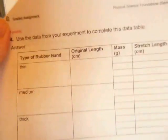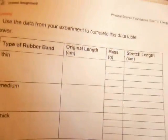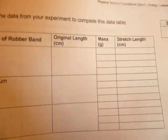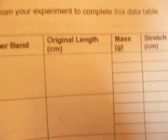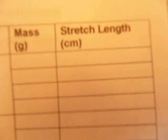Now you can start the actual lab procedure. And you already have a data table. Let me get this in focus here. You already have a data table to fill out. You've got thin rubber band, medium rubber band, thick rubber band. You have the original length in centimeters. And then you're going to record the stretch length in centimeters when you add 100, 200, and 300 gram masses on, I believe, if I remember correctly.